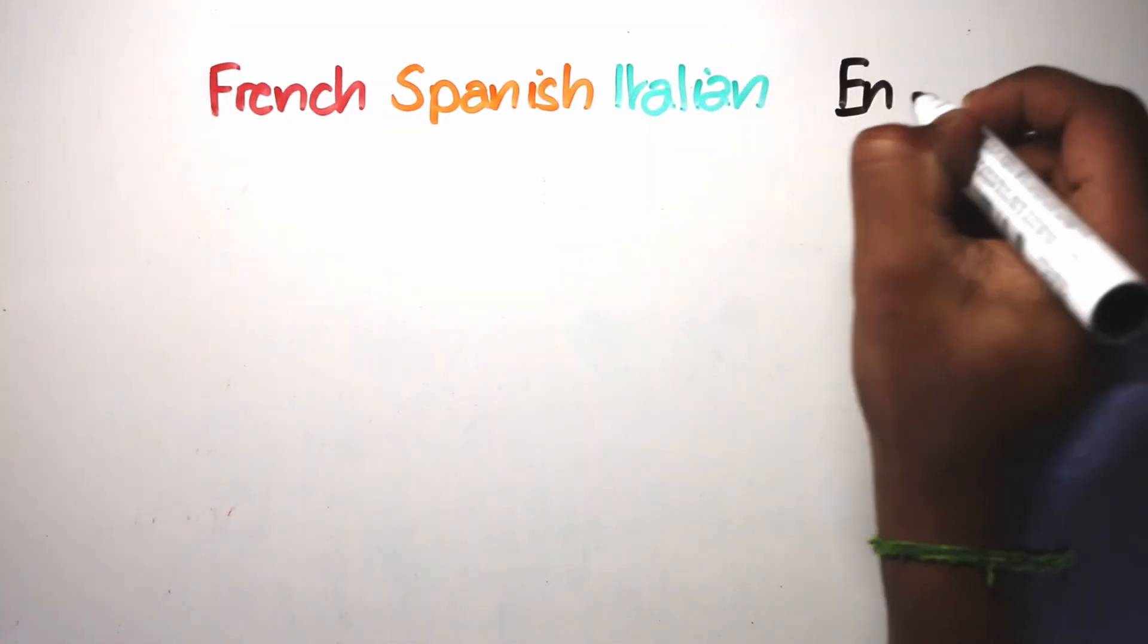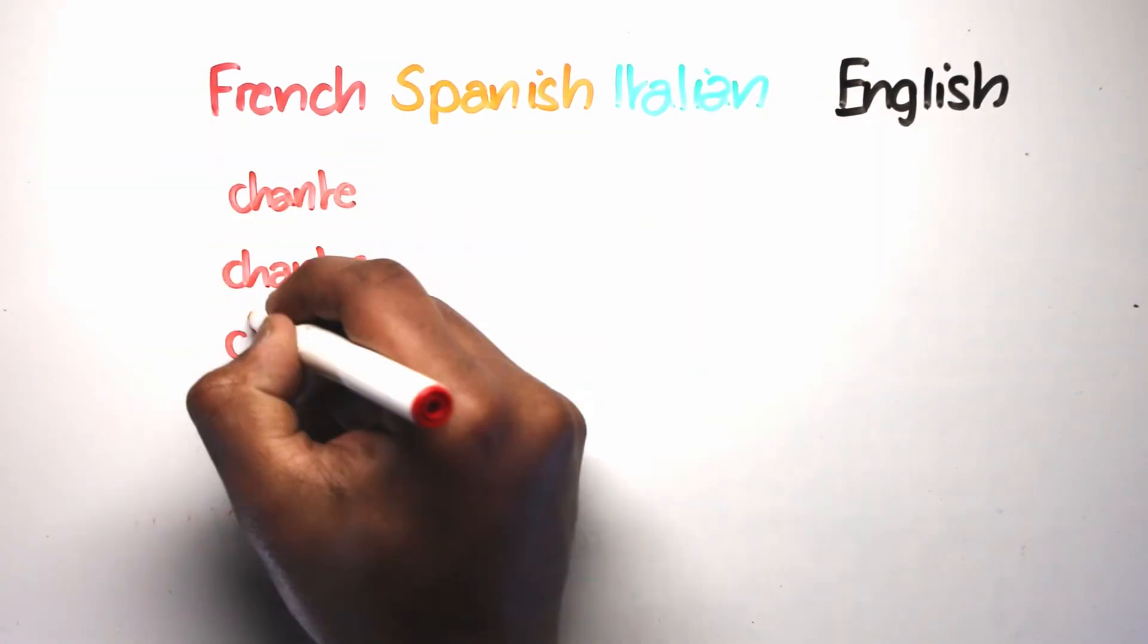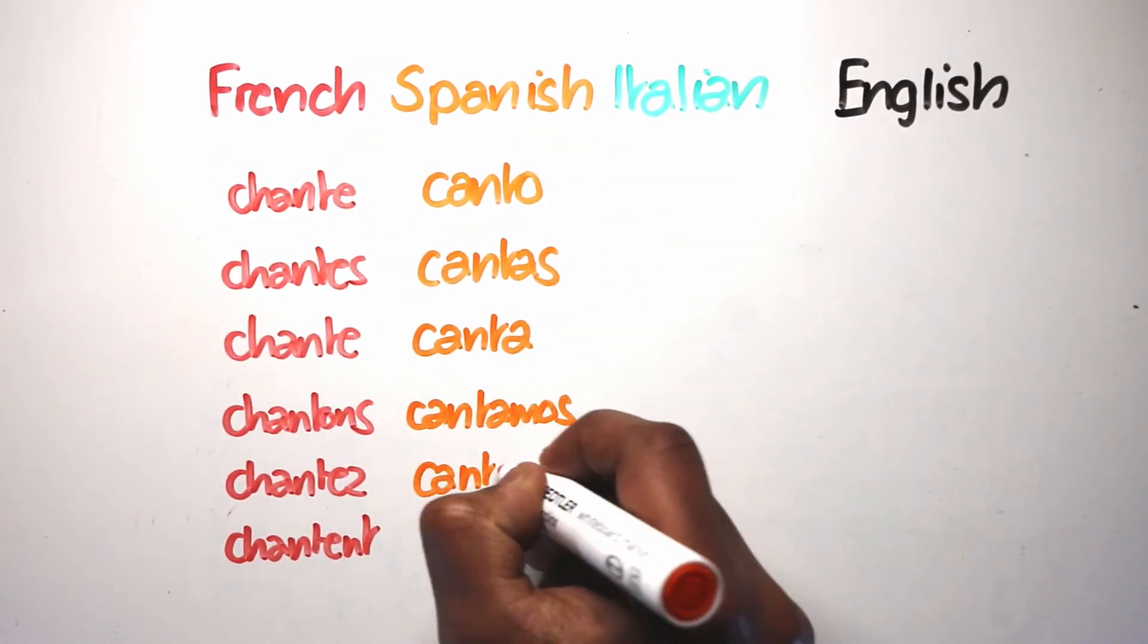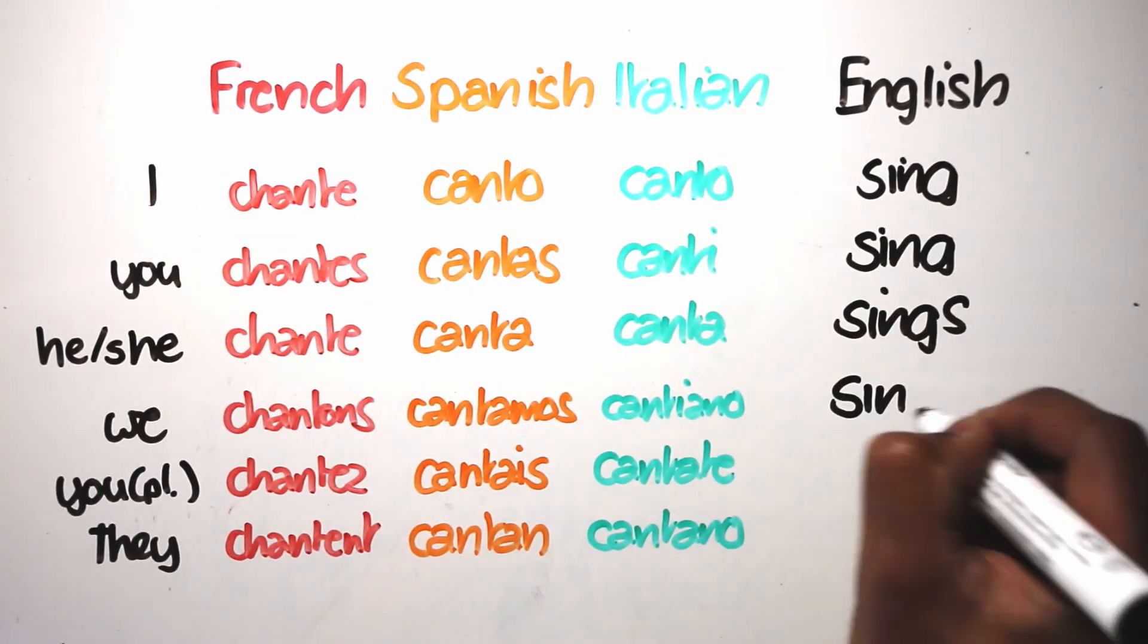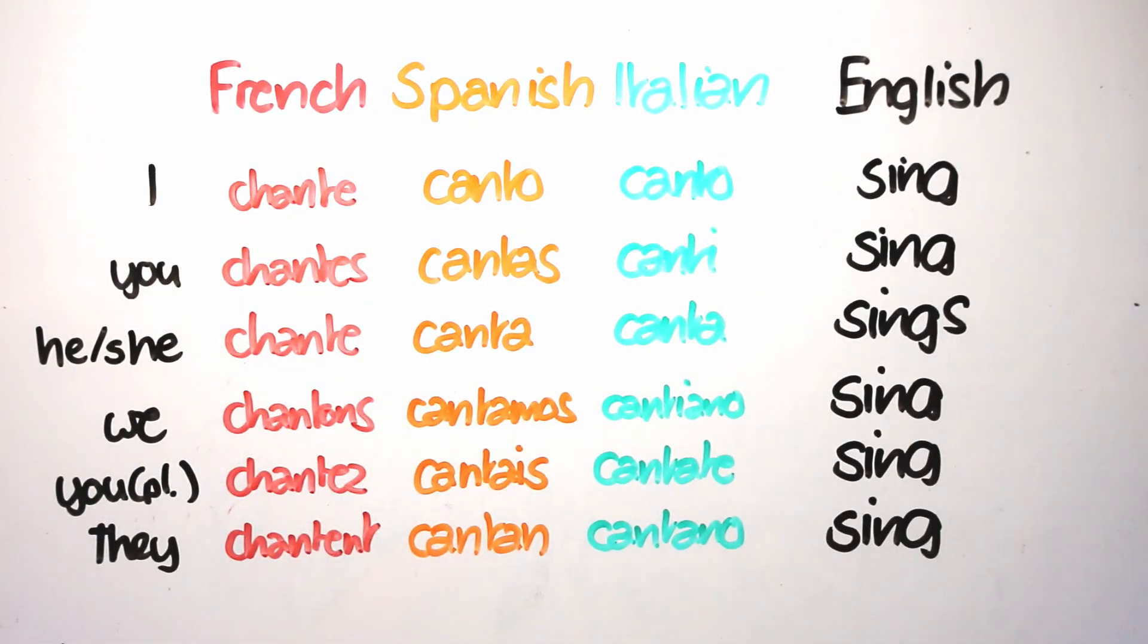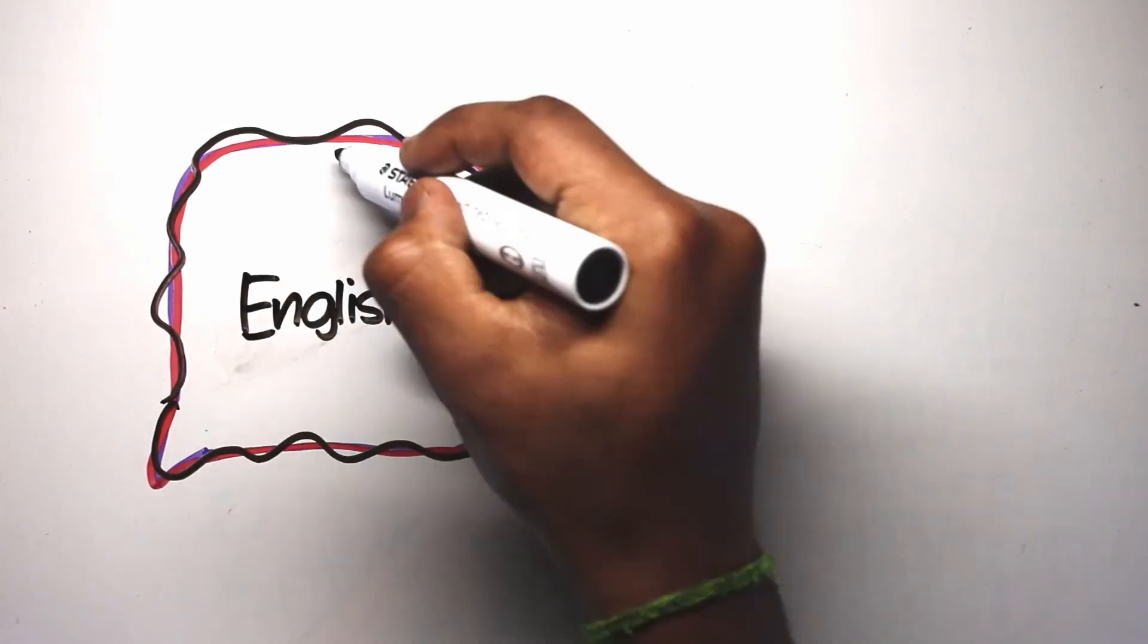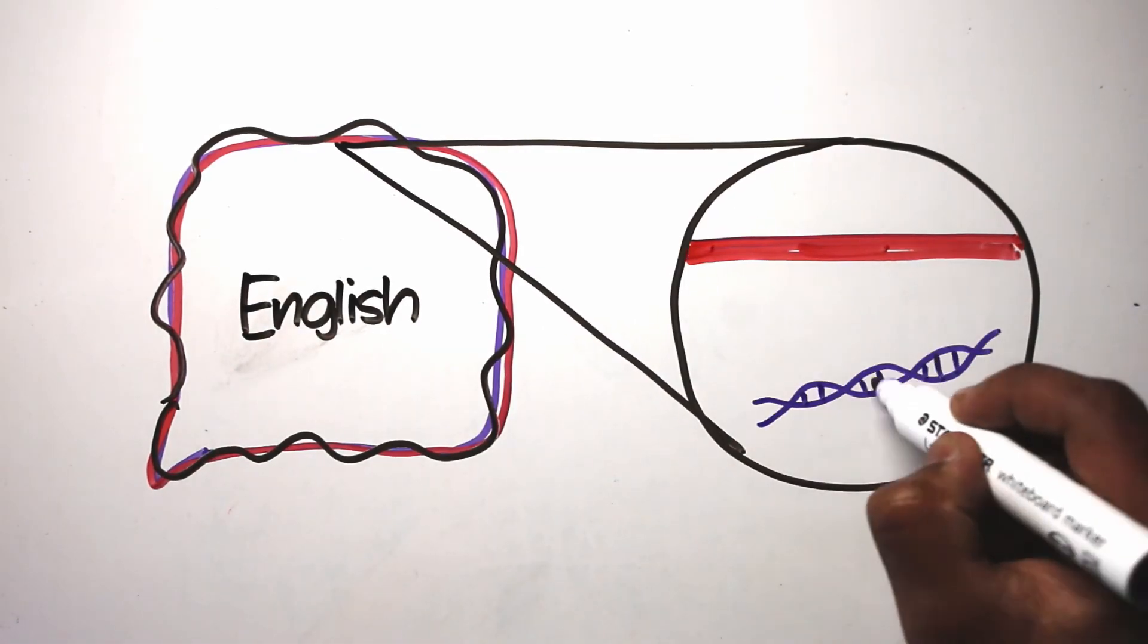In our example, contact influence doesn't make English related to the Romance languages. Genealogical relationships are established by systematic correspondences among words. You can't do this with languages with only contact influence, but you can with sister languages. So although a language like English has had a lot of Romance influence in its vocabulary, its roots are from elsewhere.